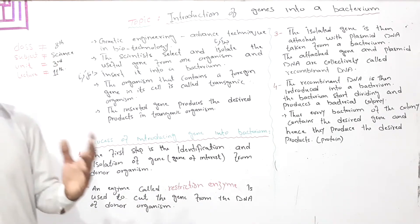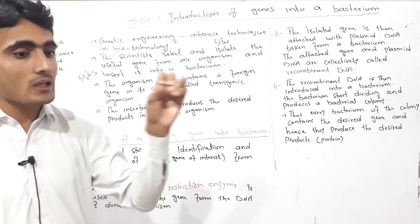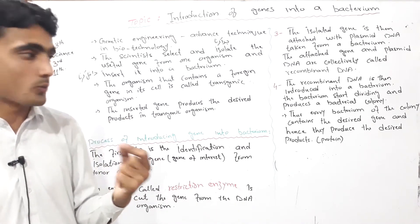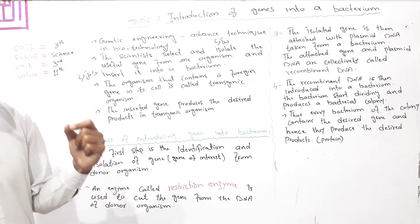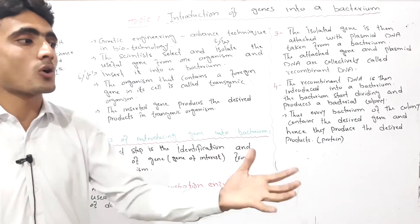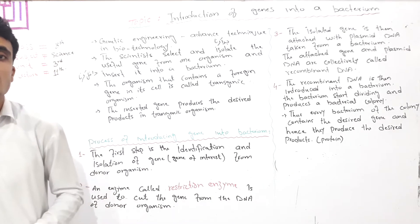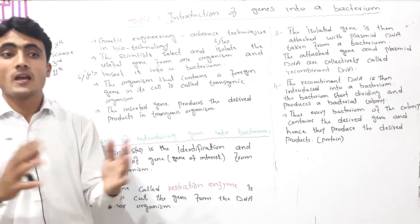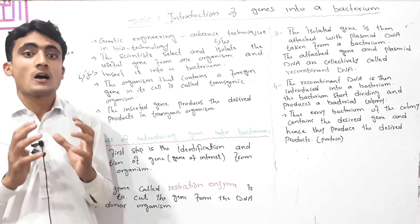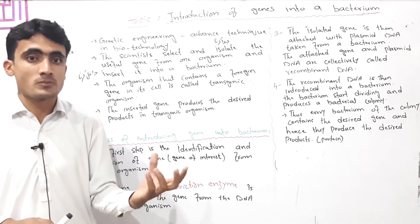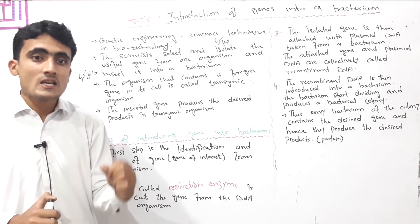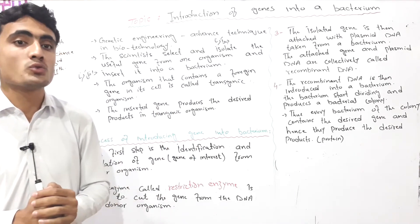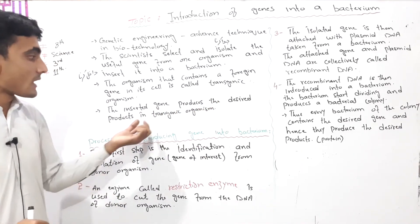The inserted gene produces the desired products in transgenic organisms. The gene product participates in the body as desirable products. Human beings have identified desirable genes with characters that scientists introduce, and these result in desirable products and transgenic organisms.